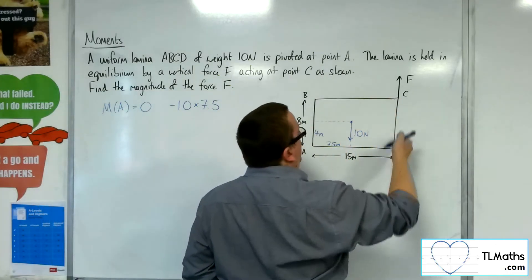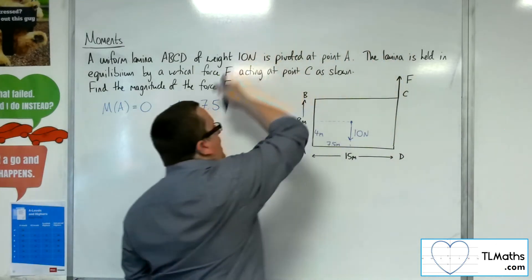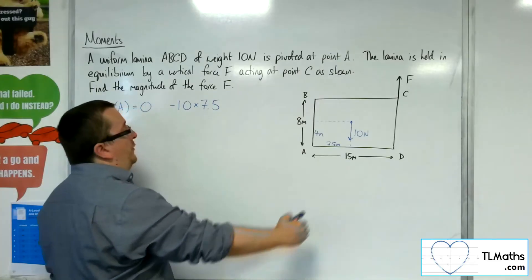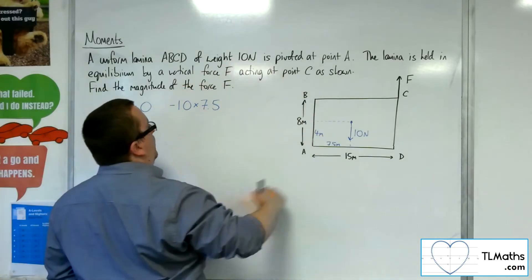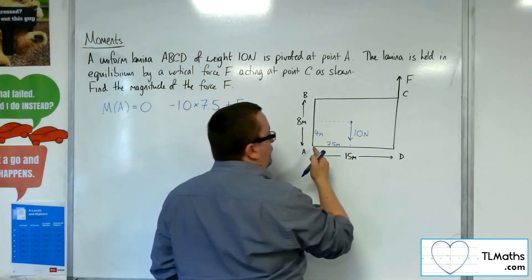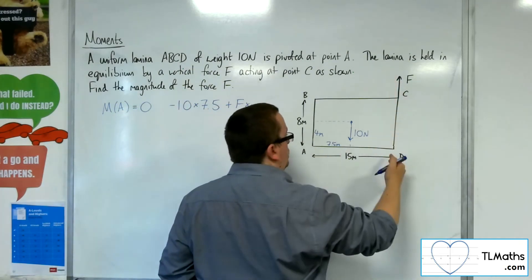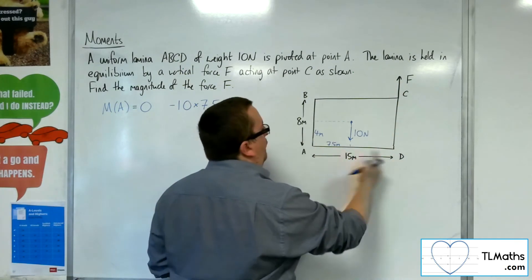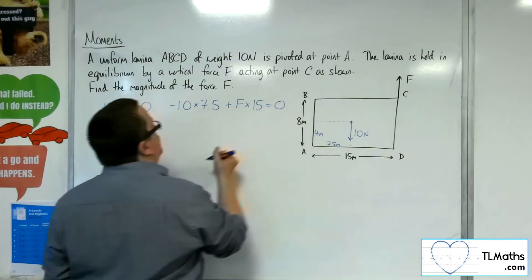And then I've got F working up that way, so that's going that way round, and so is positive because it's going around anticlockwise. So plus F, and the distance from A to the force F, the direction of F, is that full 15 meters. And that will be equal to zero.